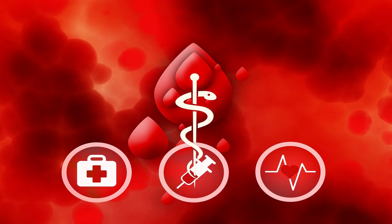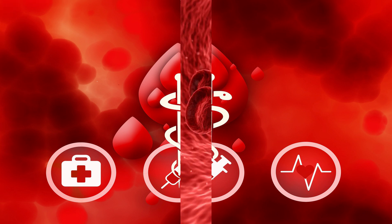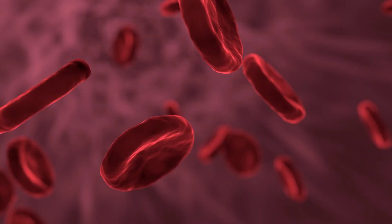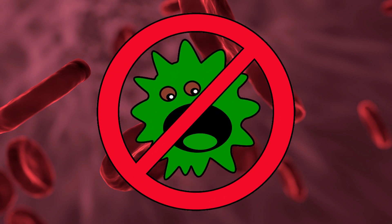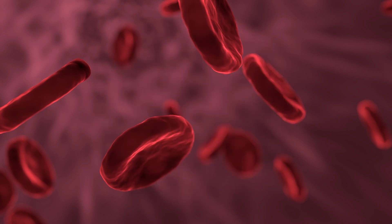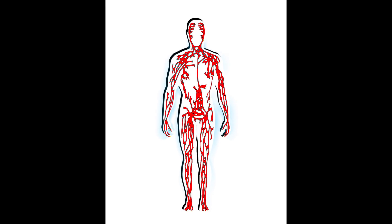In today's video we will show you the difference between blood groups. Blood is the red fluid that circulates in our blood vessels like veins and arteries. The main function of blood is to act as the body's transport system, but it also has a major role in the body's defense against infection. Everyone's blood type is unique.